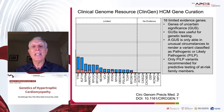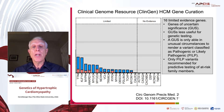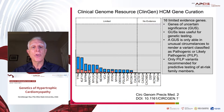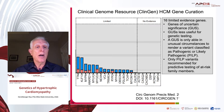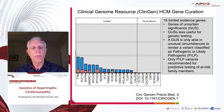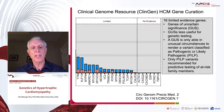There were also 16 limited evidence genes as shown here. We consider these genes of uncertain significance, or GUSs. GUSs are less useful for genetic testing because a GUS is only able, in unusual circumstances, to help with a variant classified as pathogenic or likely pathogenic. At least in the United States, using American College of Medical Genetics guidelines, only pathogenic or likely pathogenic variants are recommended for predictive testing of at-risk family members. We simply need more families and more individuals with high-quality published data to take these forward to higher levels of evidence.